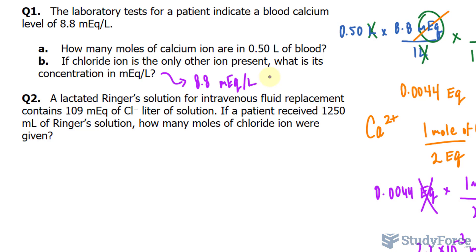Question 2 reads, a lactated Ringer's solution for intravenous fluid replacement contains 109 milliequivalent of chlorine ion per liter of solution. If a patient received 1250 milliliters, how many moles of chloride ion were given? This is somewhat the same as question number one, except we have to do it in a different order.